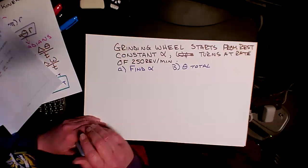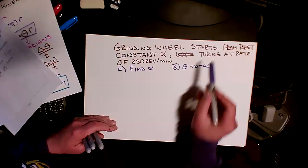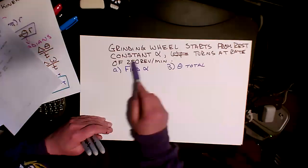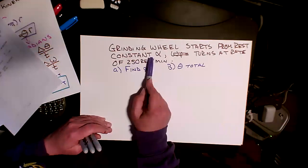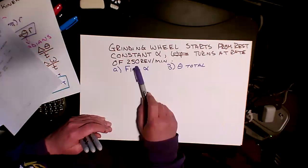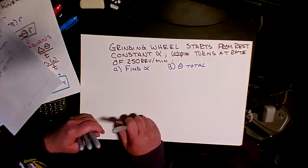Okay, so for our first question, we have this grinding wheel. It's going to start from rest and it's going to have this constant alpha, so a constant rotational acceleration, and it's going to turn at a rate of 250 revolutions per minute.